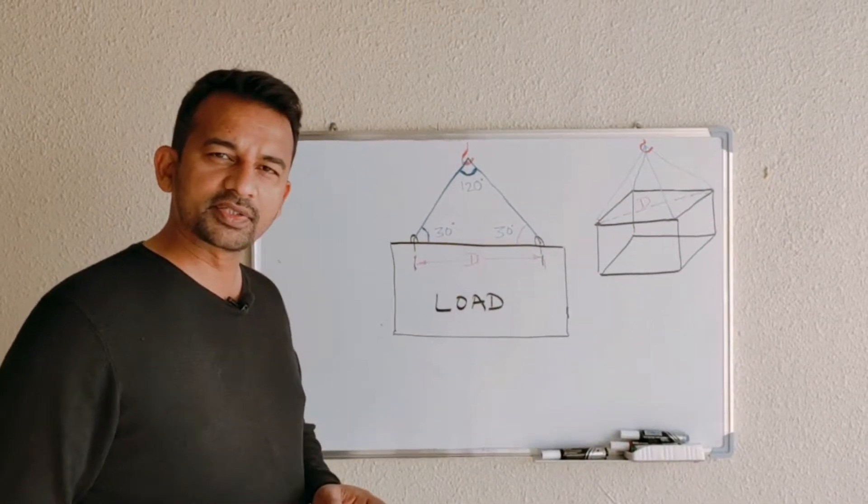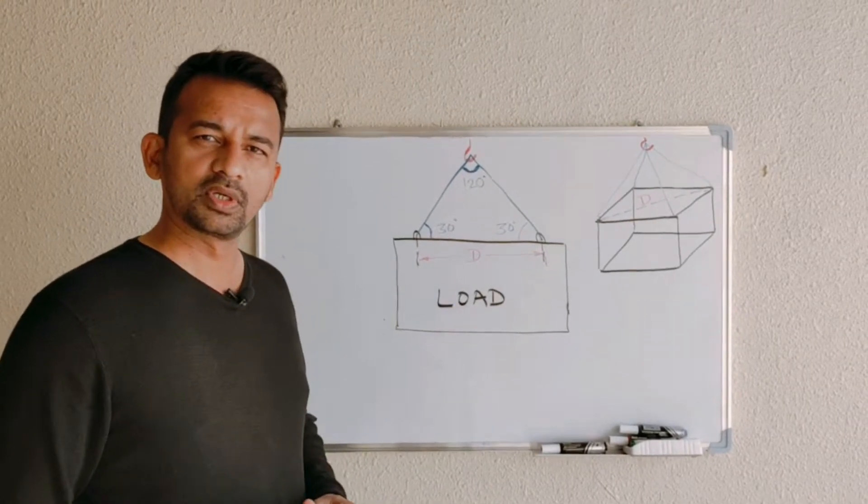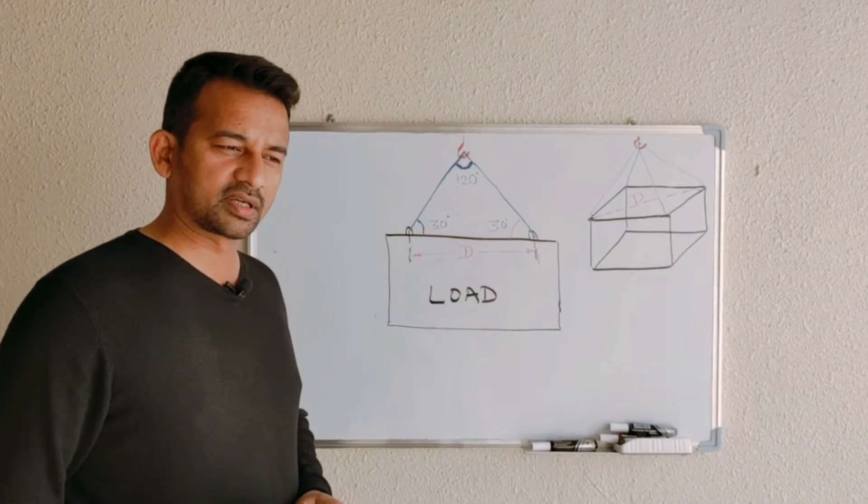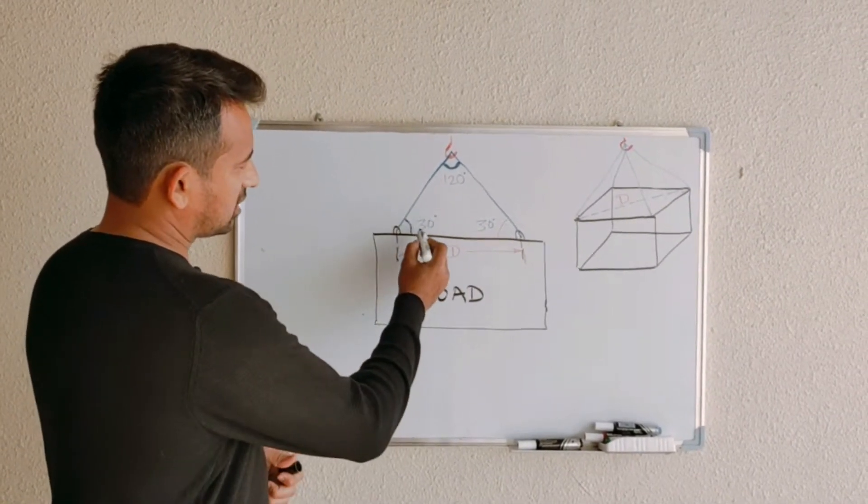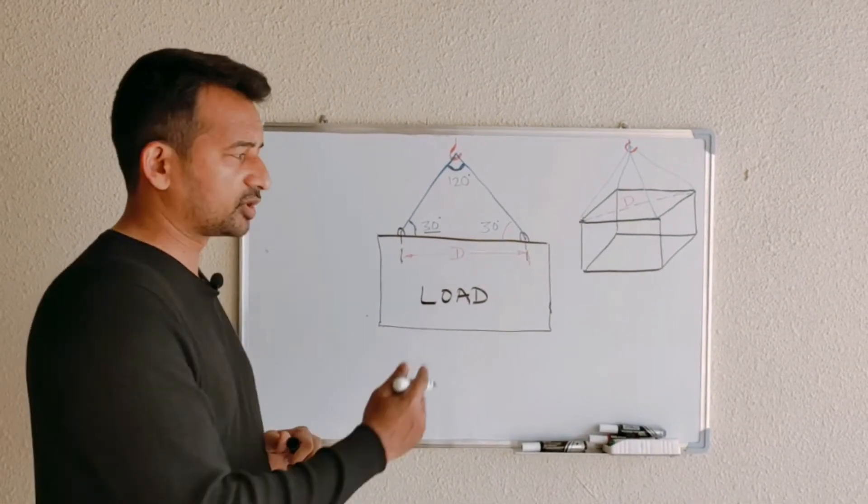If you know the distance between your lifting points or point of attachment of the sling to the load, and you want to make sure that your sling angle is not exceeding the maximum allowable sling angle, which is 30 degrees or included angle 120 degrees.